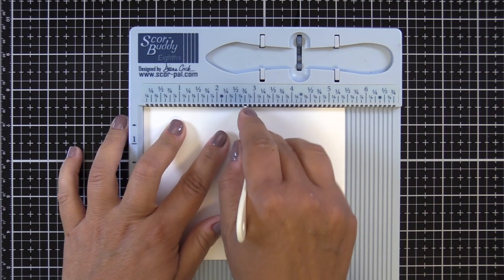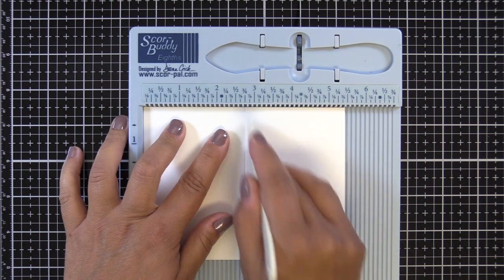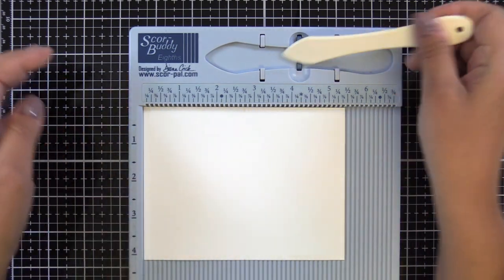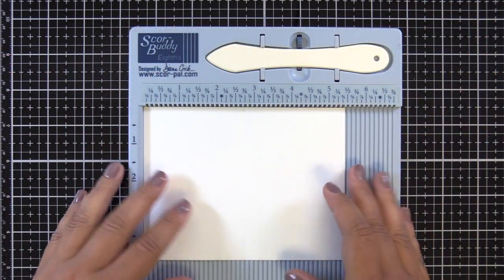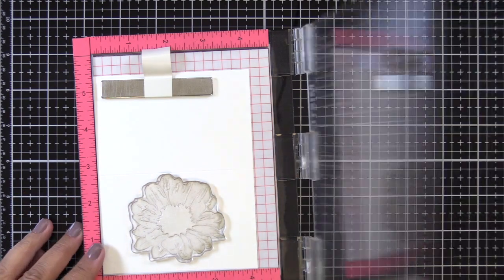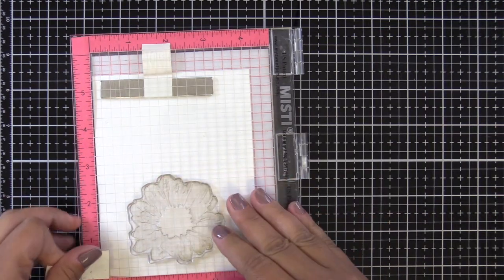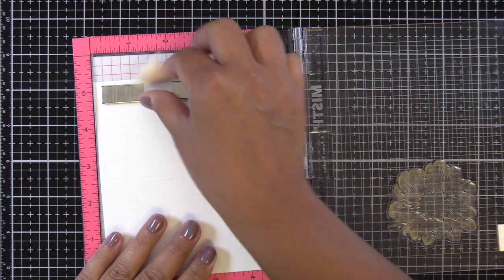So I just have a piece of A2 size Neenah Classic Crest 80 pound solar white cardstock. I have scored it in half and I'm going to stamp this daisy up at the top. The top of the petal is almost going to touch my score line.